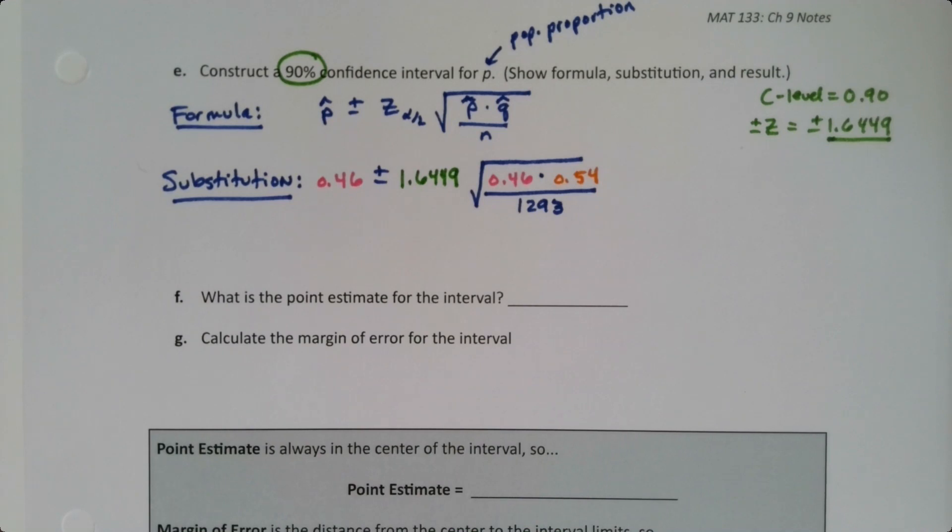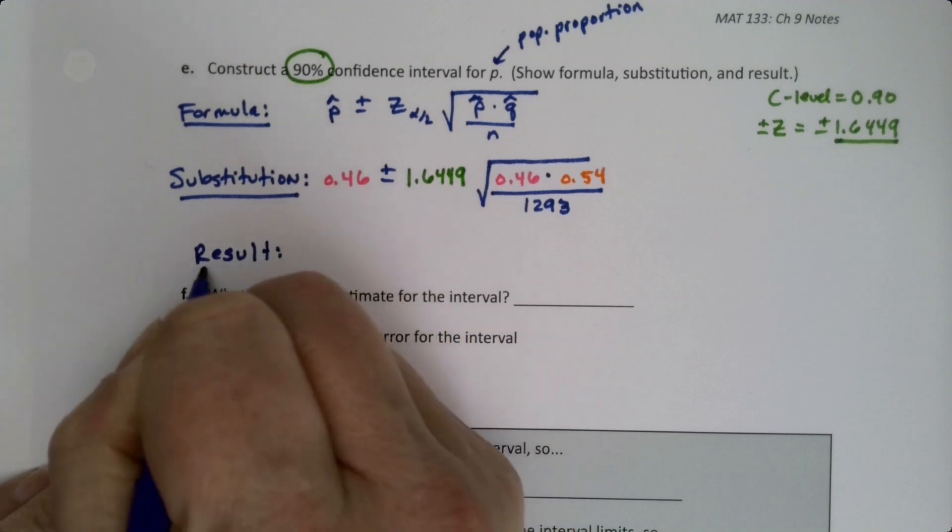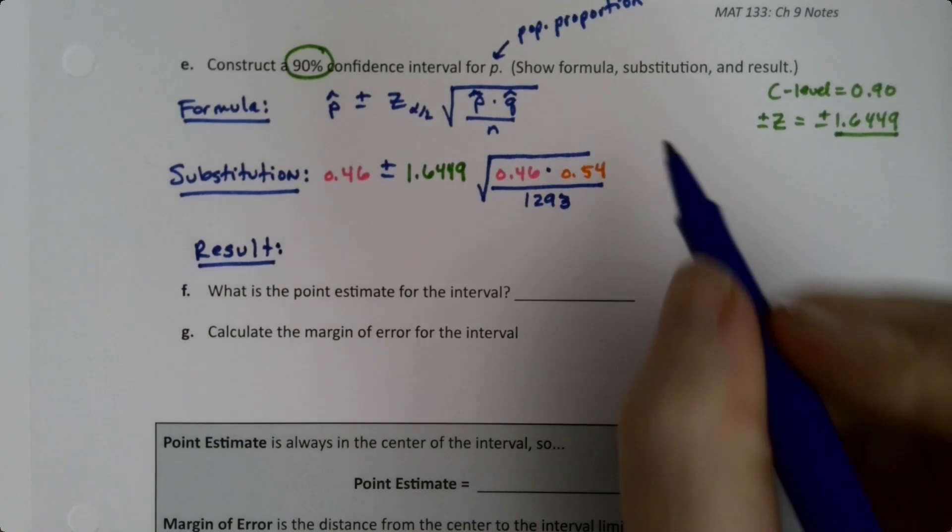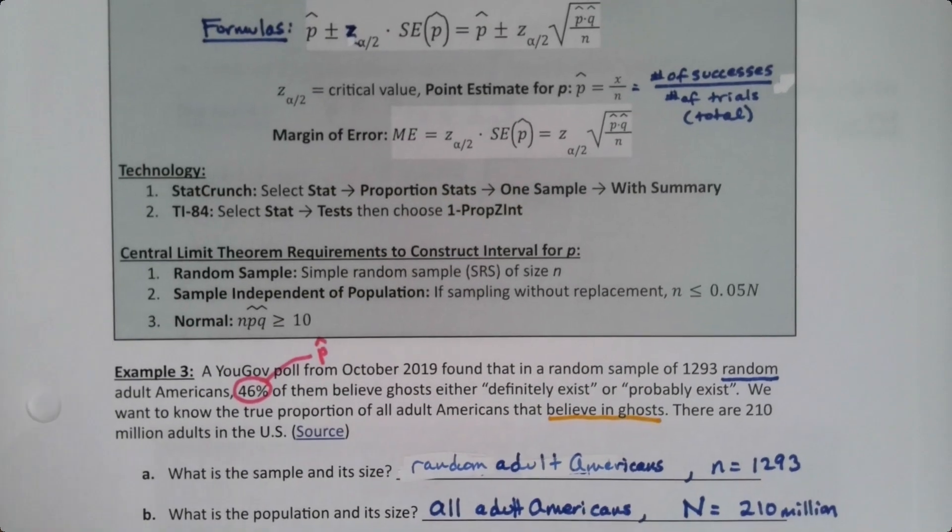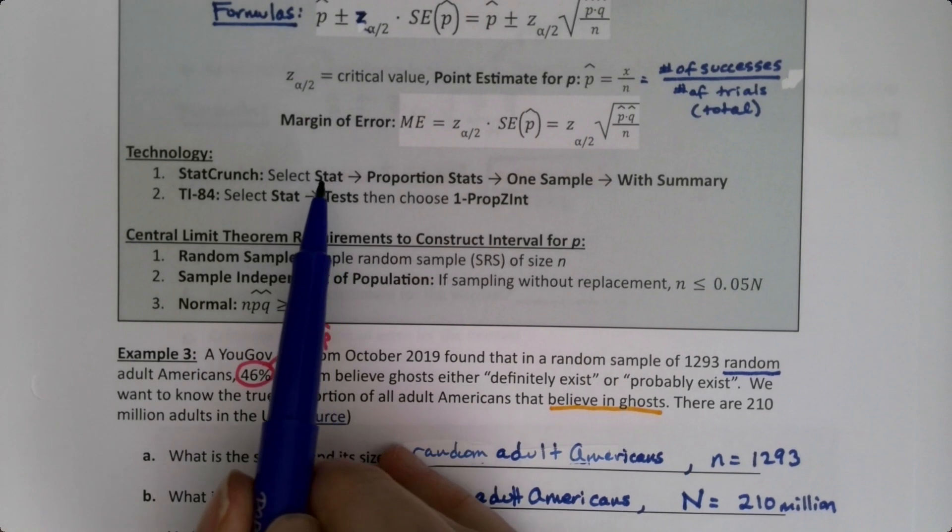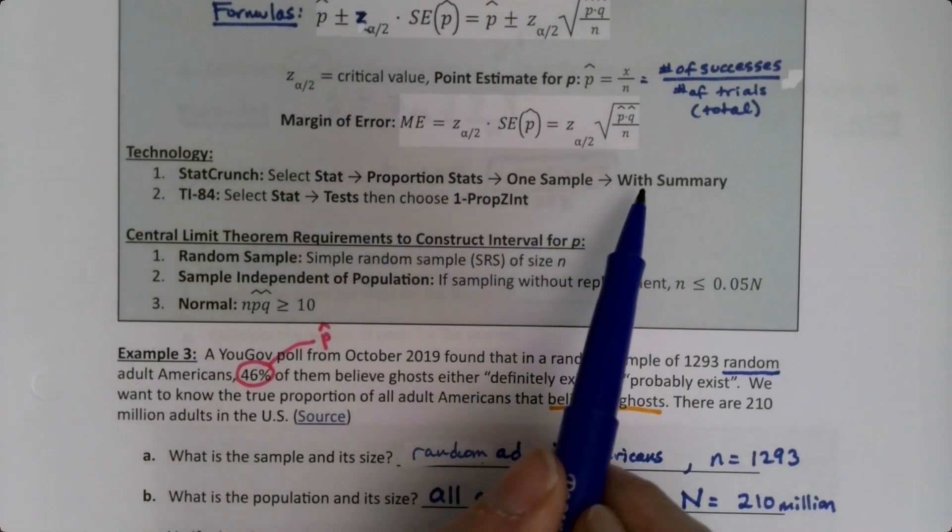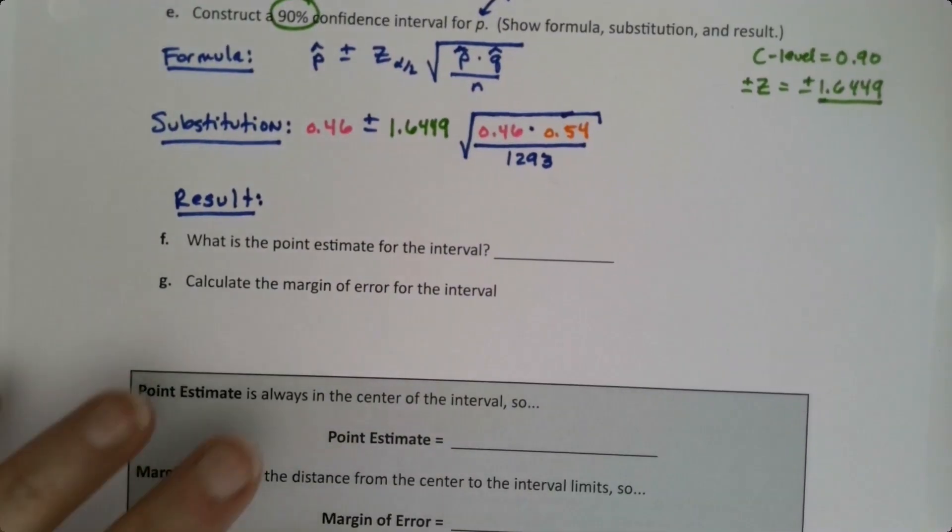All right, so now I actually want to find the result. Now there's a couple ways you could do this. You could go type it all in. Sure, you could type in this formula as it stands into Desmos, but I think there's a better way. So if you remember back here, there are StatCrunch instructions right here. It says select Stat, Proportion Stat, one sample, with Summary. There's your path right there. So I'm going to make a note, but I'm actually going to do it as well.